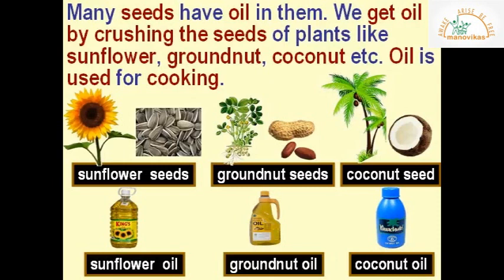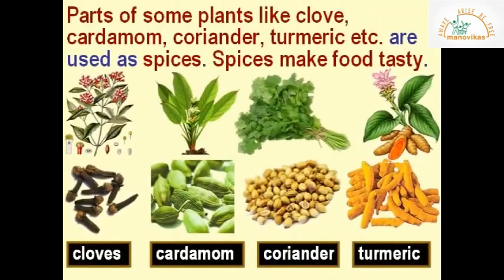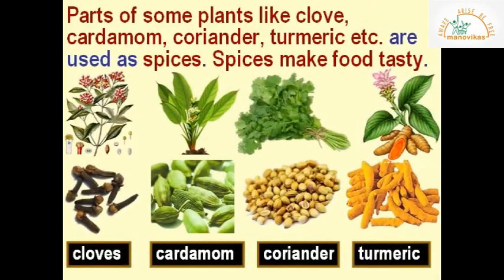Tea is also obtained from plants. By crushing the seeds of plants like sunflower, groundnut, and coconut, oil is obtained and used for cooking. Parts of some plants like clove, cardamom, coriander, and turmeric are used as spices. Spices add flavor to our food.